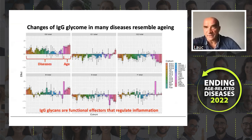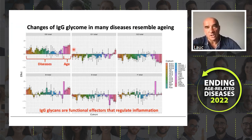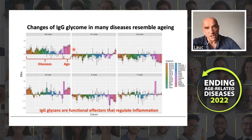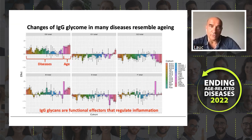Diseases are also a very strong factor. What we see on this slide are different diseases and the effects on glycan aging. People with many different diseases change glycans in the same way as with age — so people with a disease will look like an older, healthy person. And in the majority of cases we looked at, the changes in glycans actually come before the diagnosis of the disease. We believe IgG glycans are functional factors which regulate inflammation, and this low-grade chronic inflammation contributes to disease development.